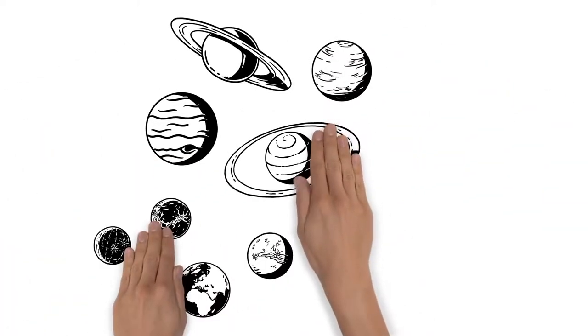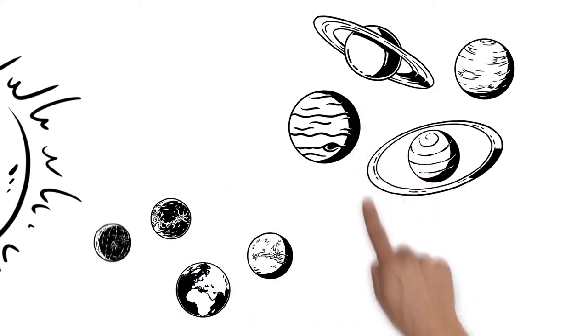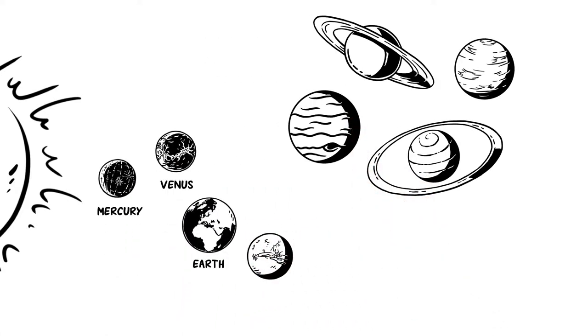Eight planets orbit the Sun. The inner ones are Mercury, Venus, Earth, and Mars.